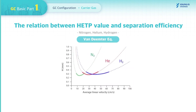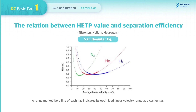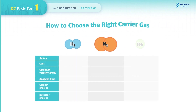The plot of the Van Deemter equation is shown on the screen. The range marked in bold for each gas indicates its optimized linear velocity range as a carrier gas. You can now choose the right carrier gas depending on your application by referring to the following table.